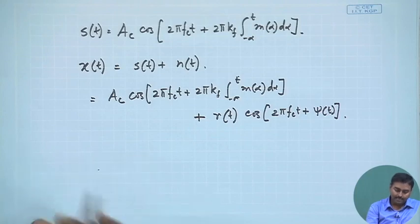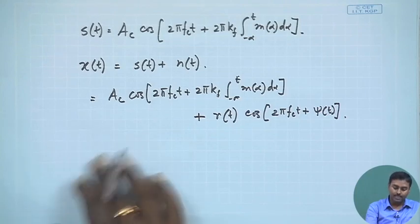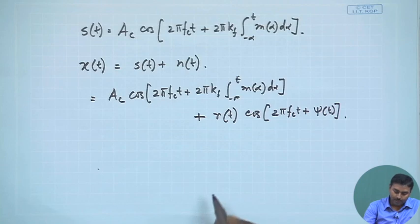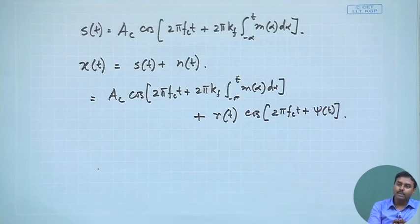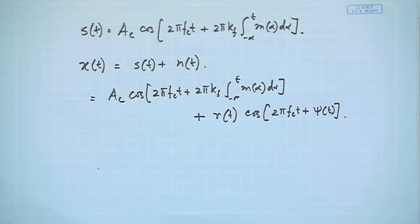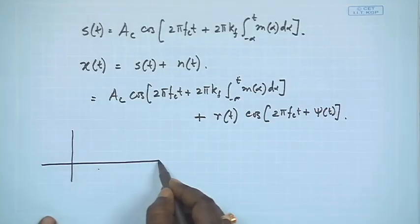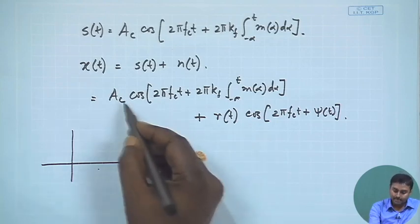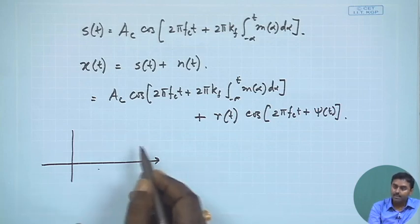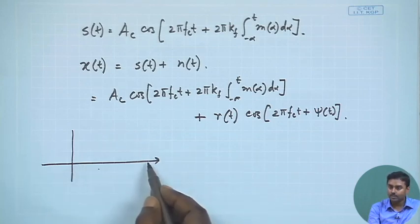To characterize this, let us draw a phasor diagram, which is very famous in FM. We will put the phase as the angle and the amplitude along the radius, making it a two-dimensional diagram. In any phasor, the reference is very important, and here we take the signal as the reference.